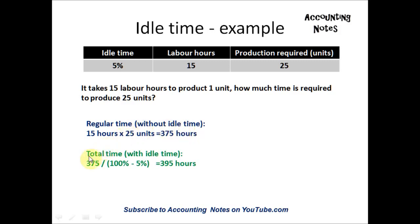Last step is to include the idle time in the regular time to get a total time. So what we would do is take the regular time required, which is 375 hours. You take 375 and divide it by... because the idle time is 5% and the total time is 100%, so 100% minus 5% is 95%.